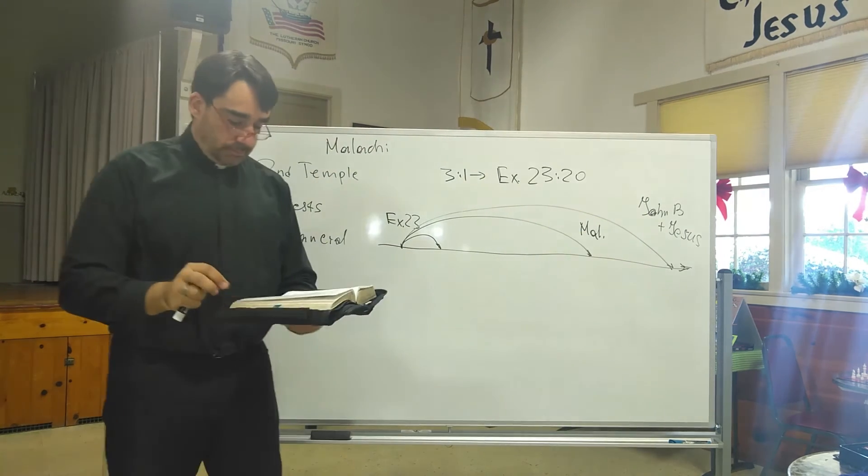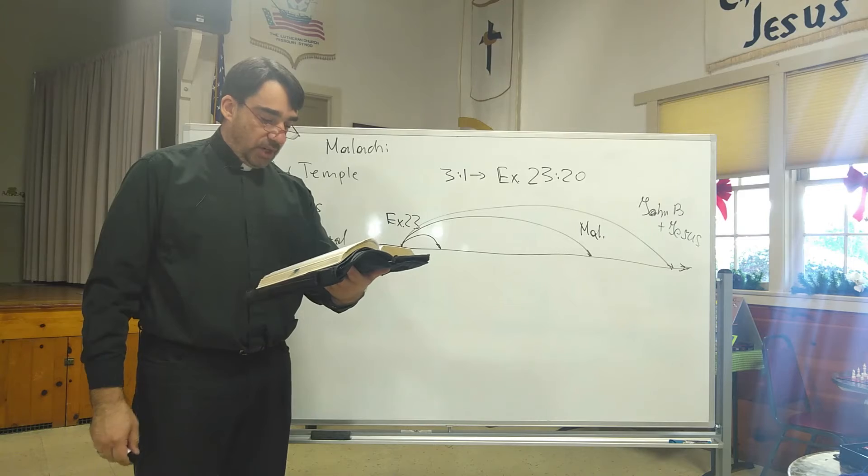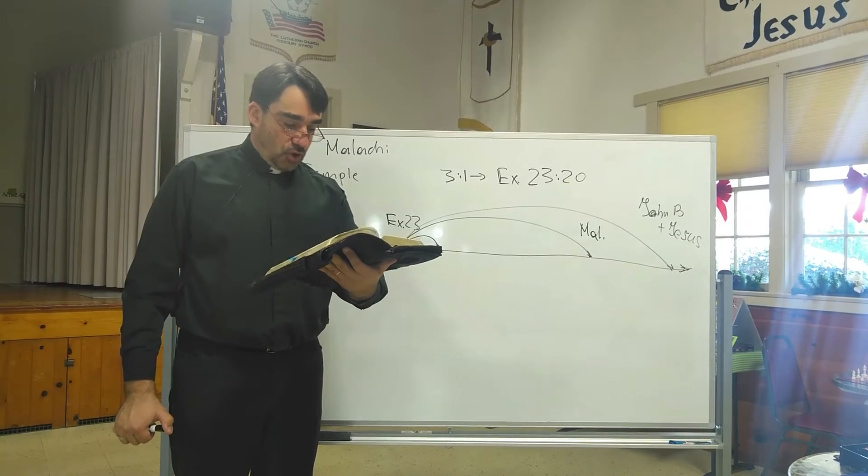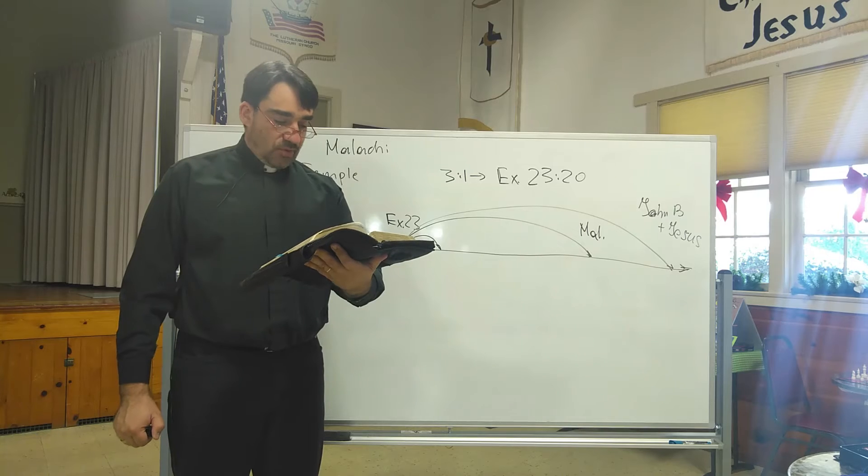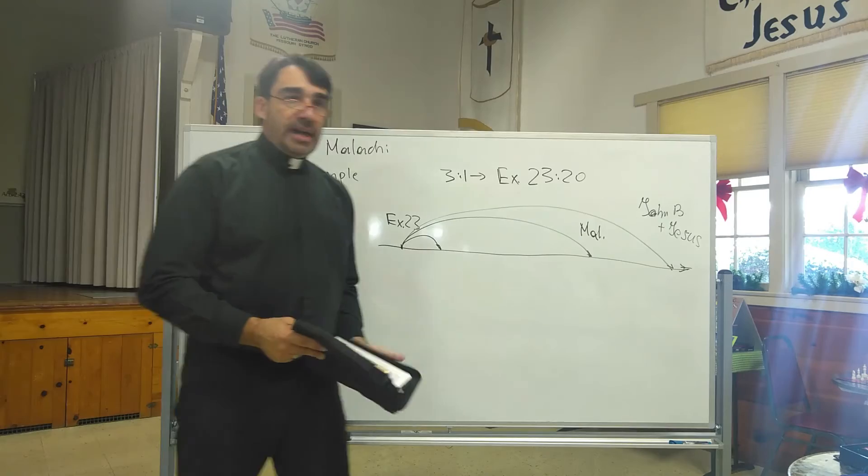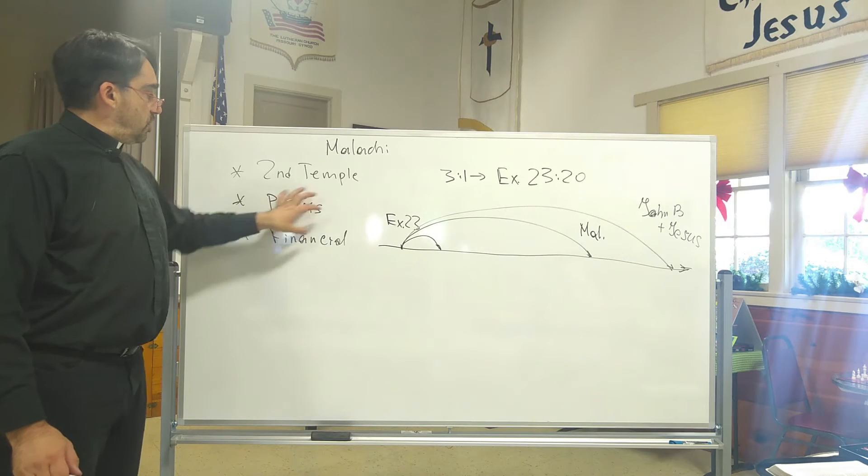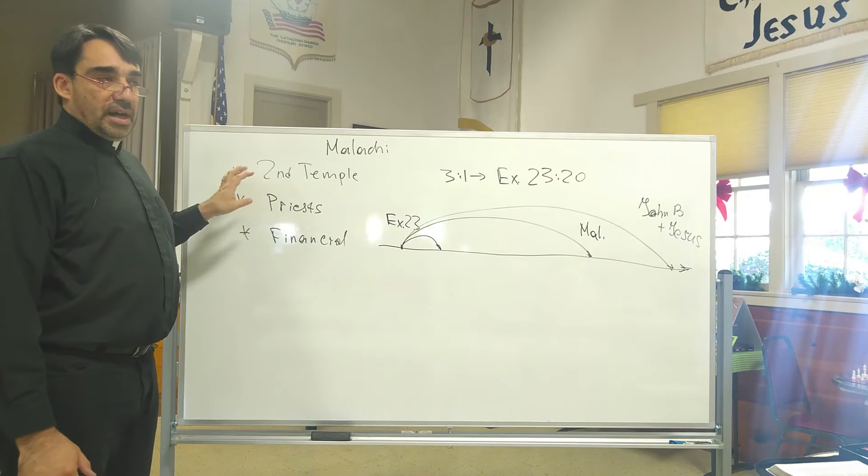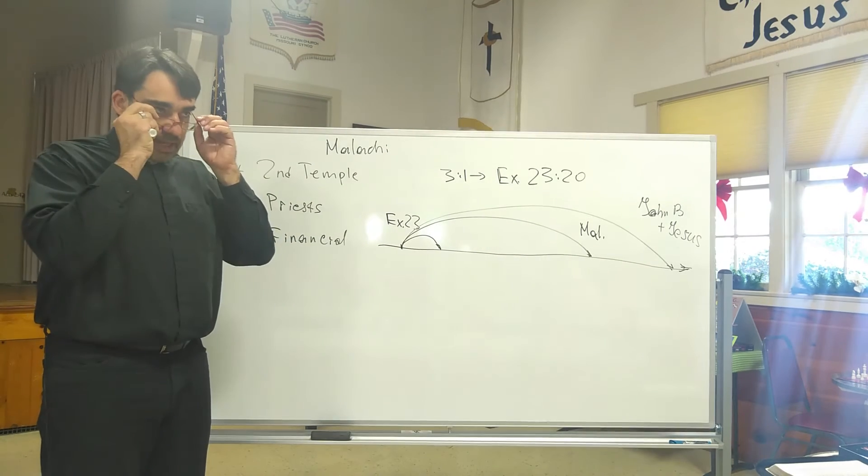Verse 2: But who can endure the days of his coming and who can stand when he appears? For he'll be like a refiner's fire and fuller's soap. He will sit as a refiner and purifier of silver and will purify the sons of Levi and refine them like gold and silver, and they will bring offerings in righteousness to the Lord. Why do we have special attention to the sons of Levi? That's a serious and important question for Malachi. He deals with priesthood, he deals with the sons of Levi.